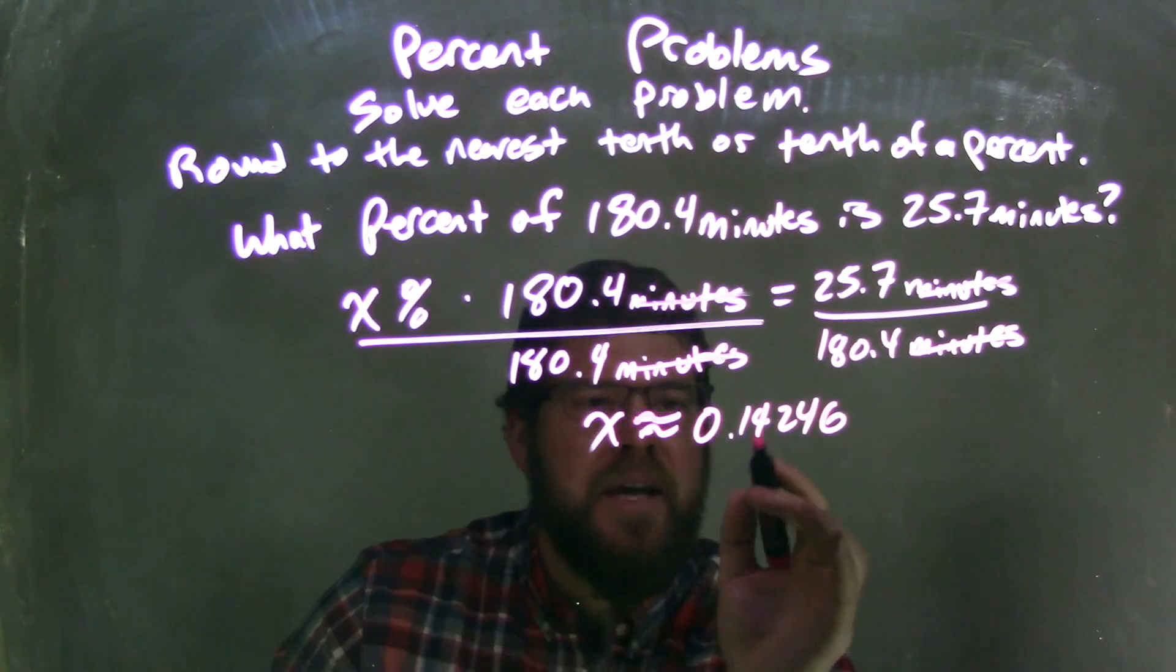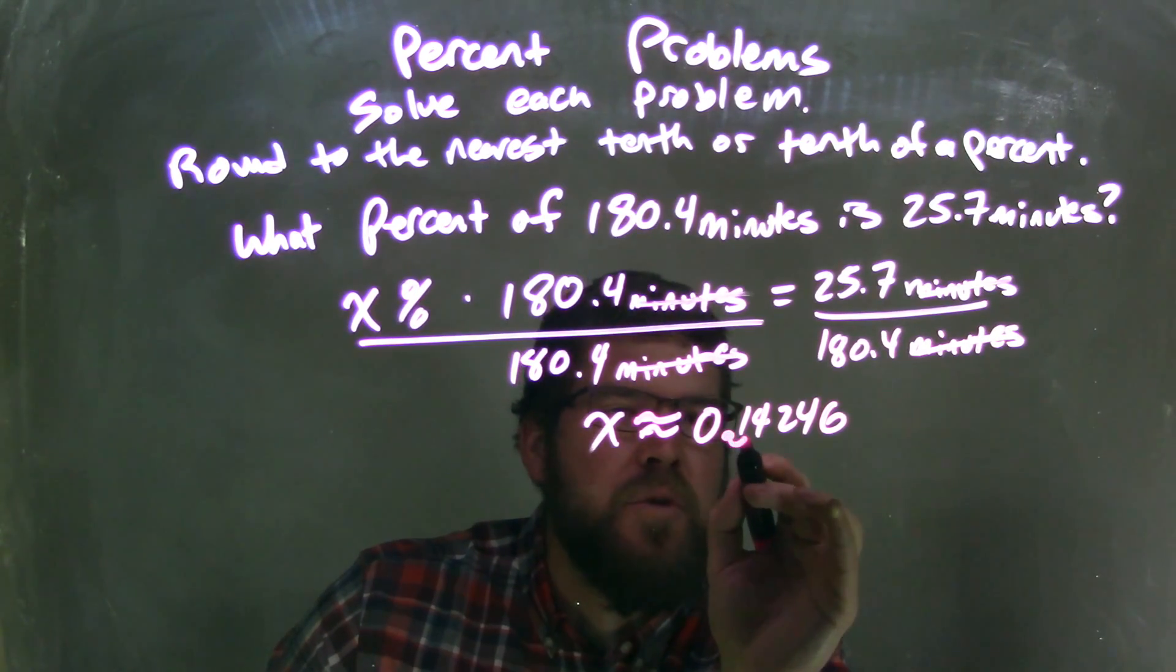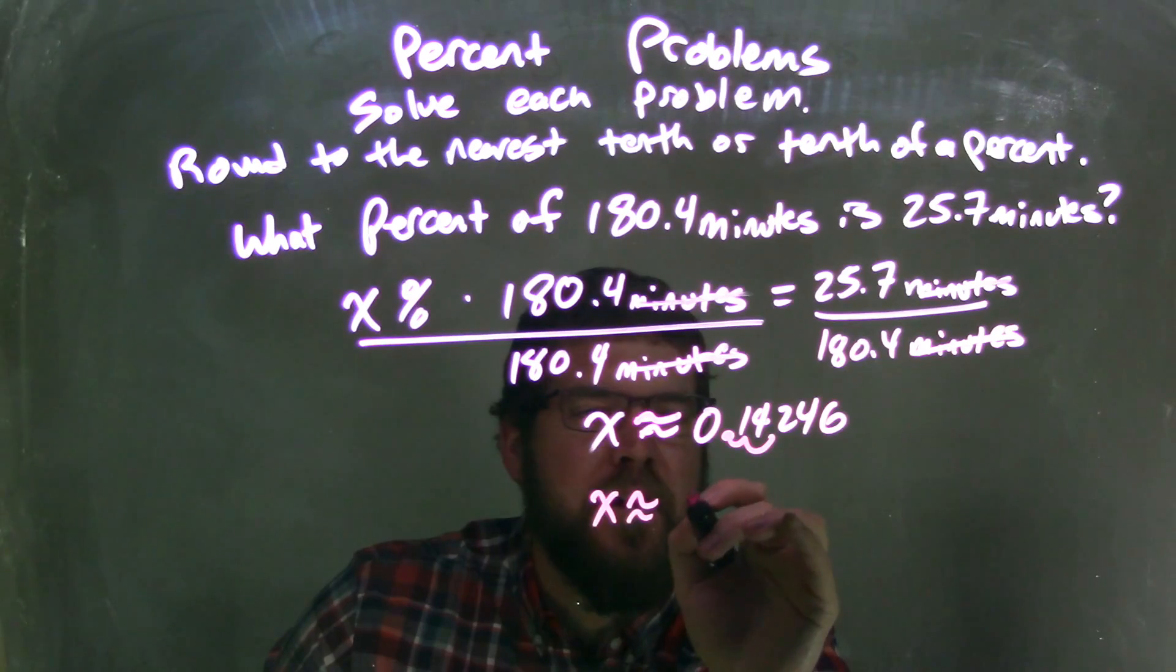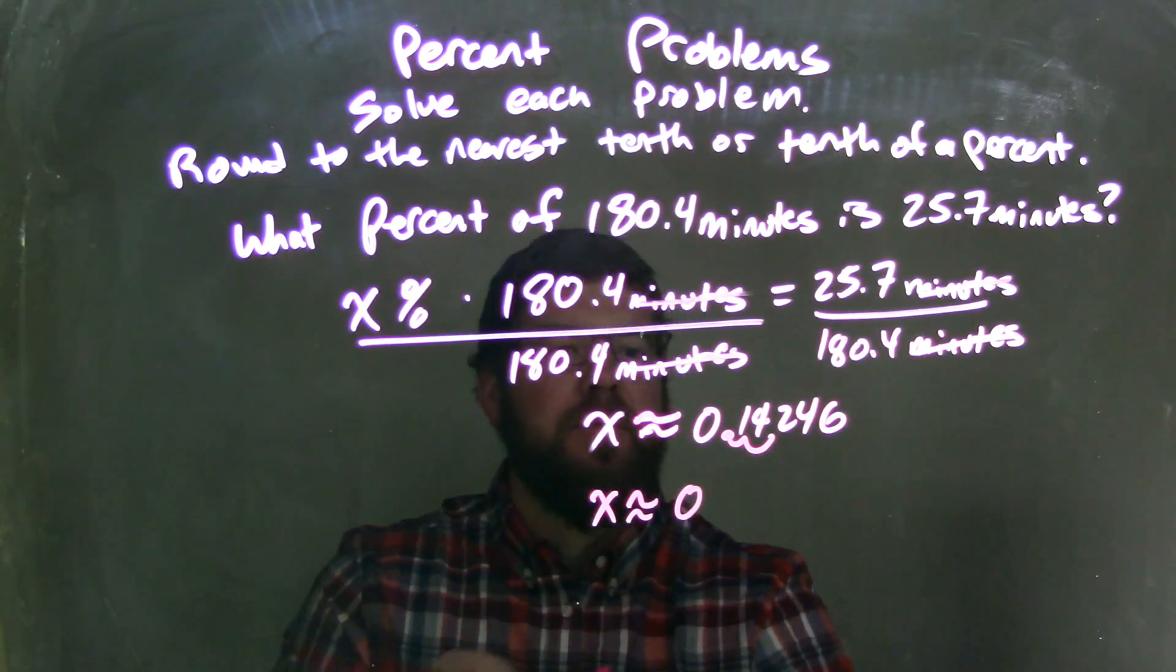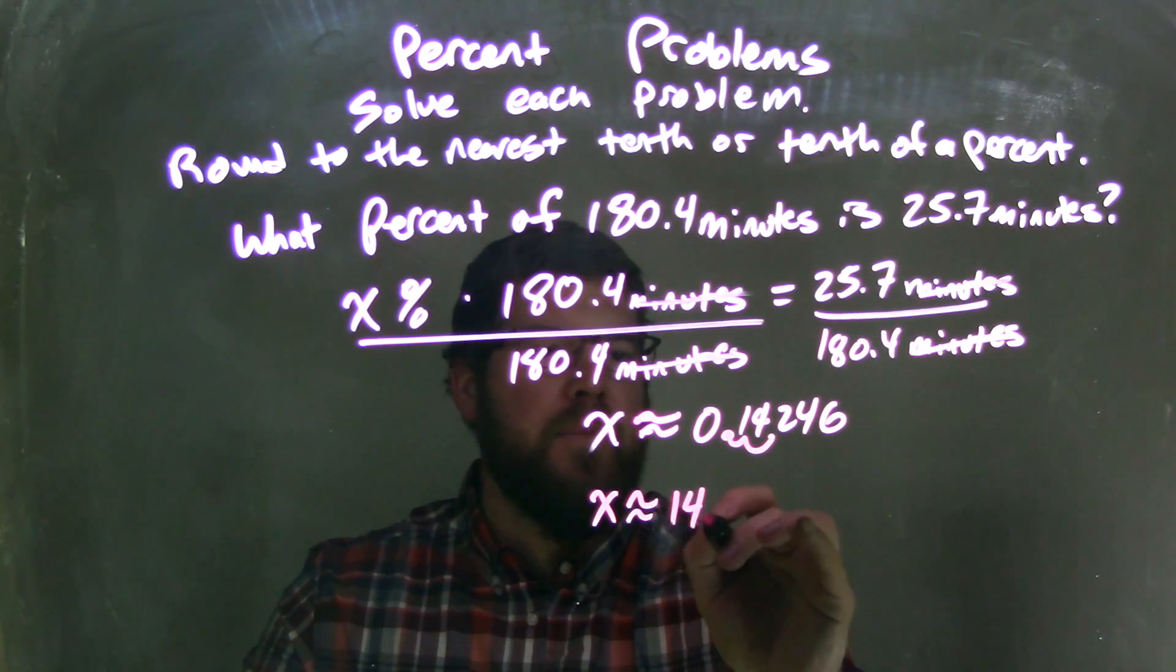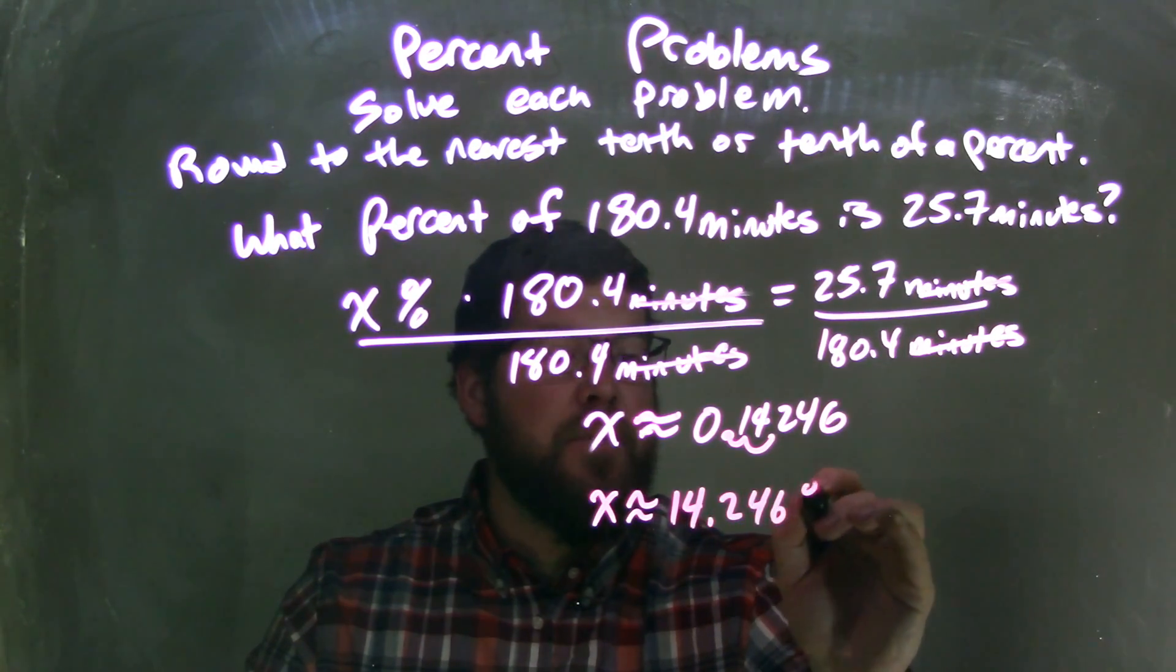I need to convert that to a percent. So remove that decimal two units to the right. Leave me with x is approximately—not zero, it's a percent now—14.246%.